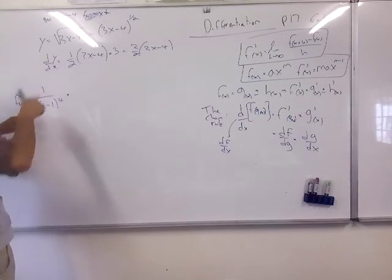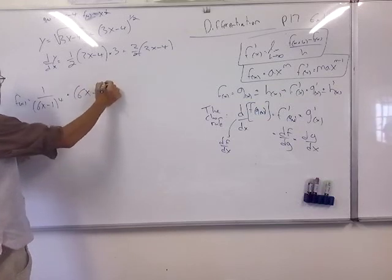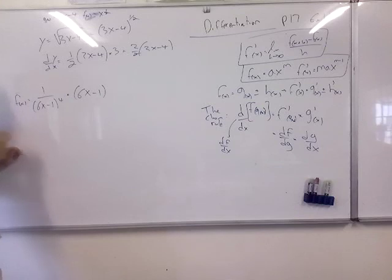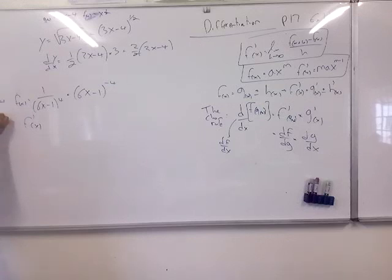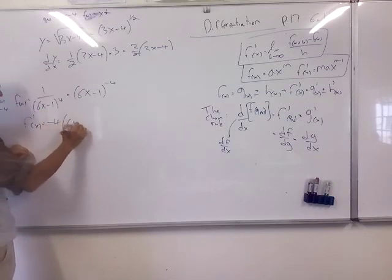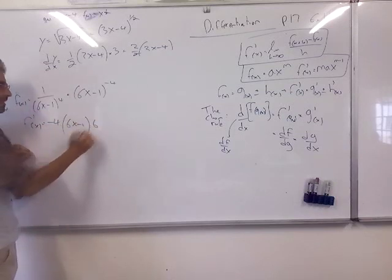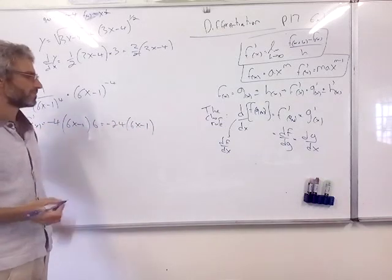Another example: f(x) = 1/(6x - 1)⁴. Rewrite as (6x - 1)^(-4). Apply chain rule: -4 times (6x - 1)^(-5) times the derivative of the inside, which is 6. So the derivative is -24(6x - 1)^(-5).